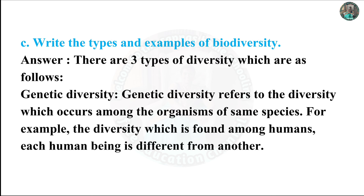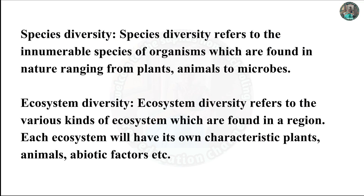C. Write the types and examples of biodiversity. There are three types of biodiversity. First, genetic diversity: diversity which occurs among organisms of the same species — for example, the diversity found among humans, as each human is very different from another. Second, species diversity: refers to the individual species of organisms found in nature, ranging from plants and animals to microbes. Third, ecosystem diversity: refers to the various kinds of ecosystems found in a region; each ecosystem will have its own characteristics, plants, animals, abiotic factors, etc.